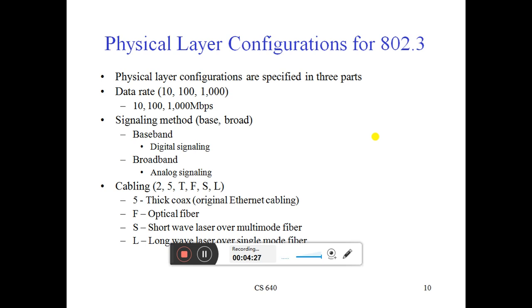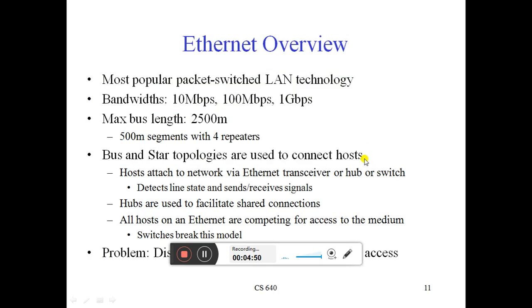At the physical layer, cabling is a key factor. There is different data rate communication using baseband and broadband networks, analog signaling, coaxial cables, and separate fiber optic networks. Multi-mode fiber means different modes can communicate, and it uses a longer laser transmission mode. The advantage of fiber optic mode is faster communication using Ethernet.